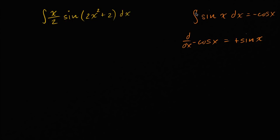But that's not what I have here. I don't have sine of x — I have sine of two x squared plus two. And then I have this other thing with an x here.